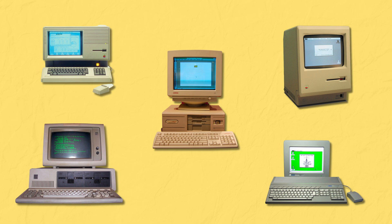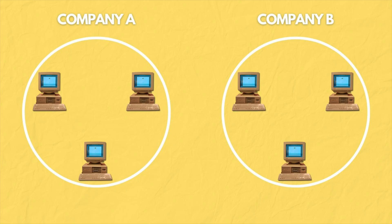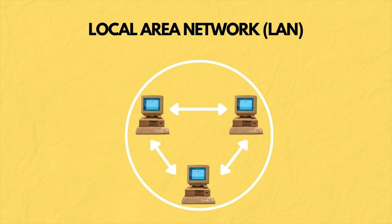The computers that did exist at these large organizations worked in silos. There wasn't a way for a computer at Company A to communicate with a computer at Company B. Though within their silos, they were able to have all their computers in their own network communicate and share data with each other. These are called LANs, or Local Area Networks.